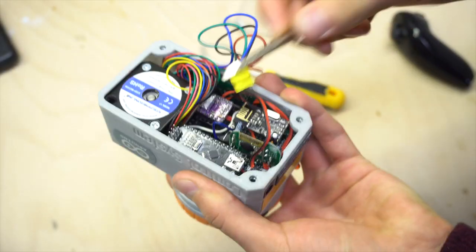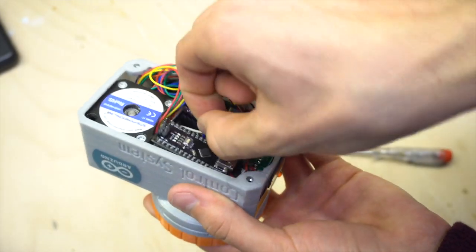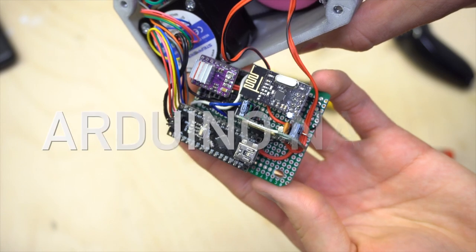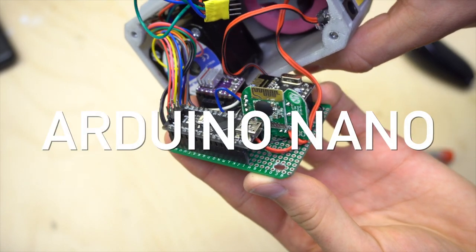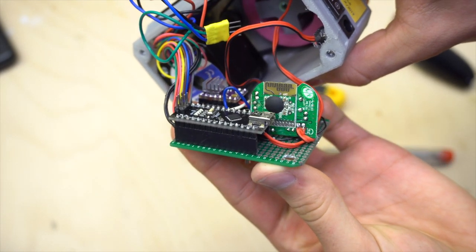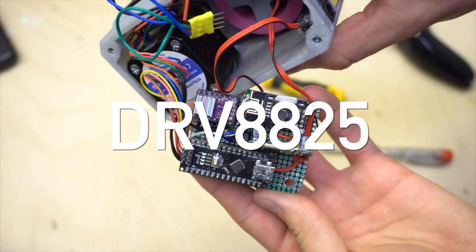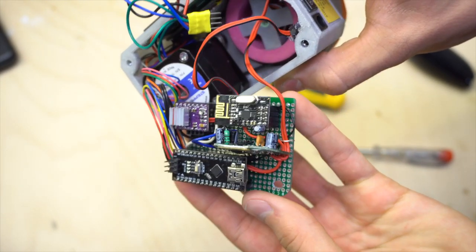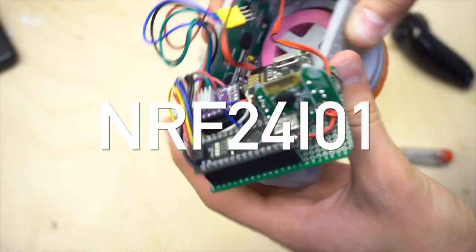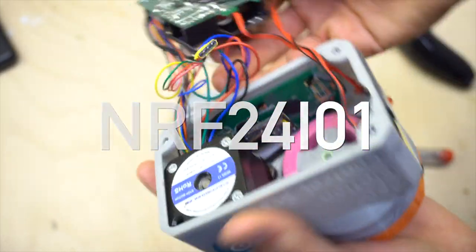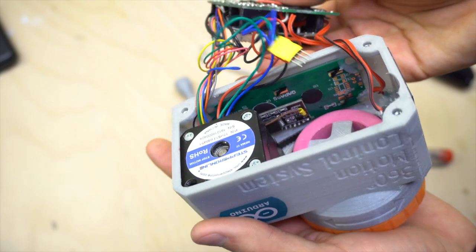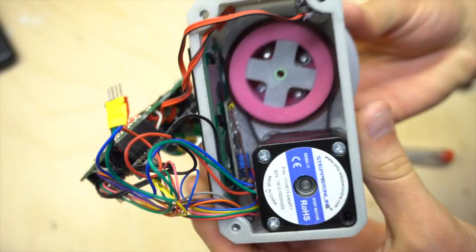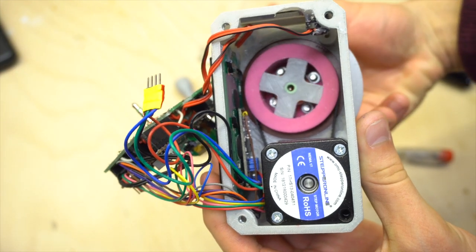But for now let's continue with the interesting part, the electronics. As you may have already noticed I built an Arduino Nano into this project as well as a stepper motor driver which is a DRV8825 and of course also a 2.4 GHz wireless transmitter. This transmitter is used to communicate with any future projects, for example a motorized camera slider that I will do in my next video so that I can control everything from one place.